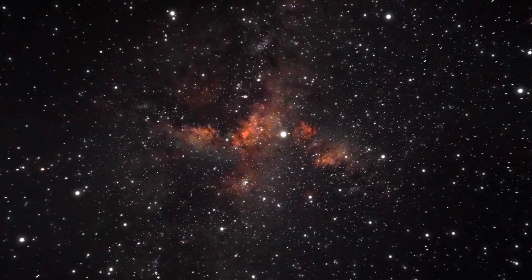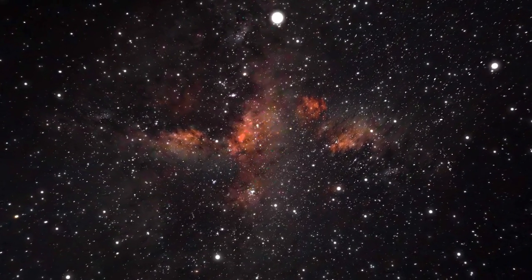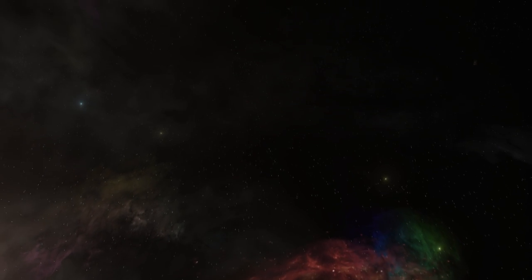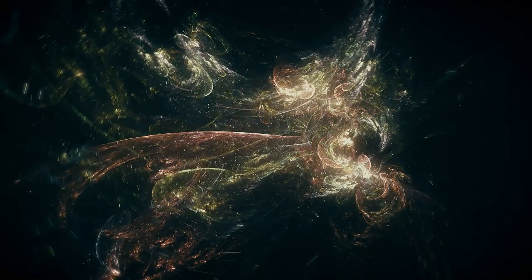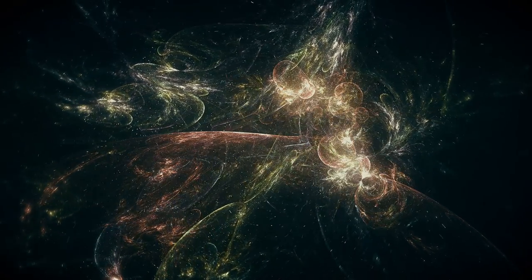Scientists have also created a model of a structure located in the opposite direction from the Shapley supercluster. There, astronomers discovered a region of extremely low density called the dipole repeller. The Shapley supercluster pulls celestial bodies away from this region of space due to its insane gravity.